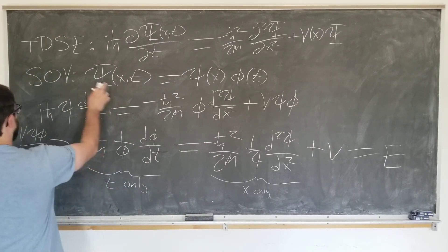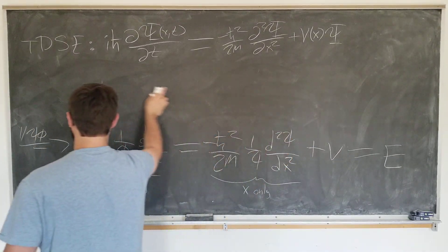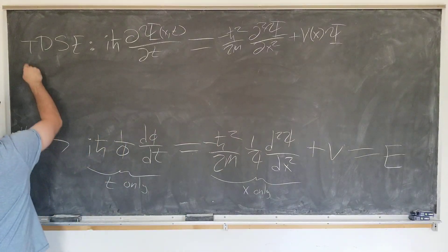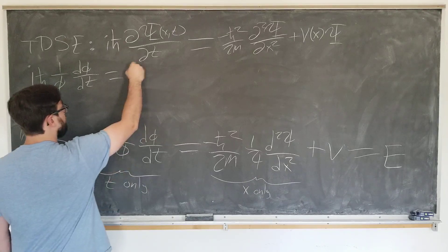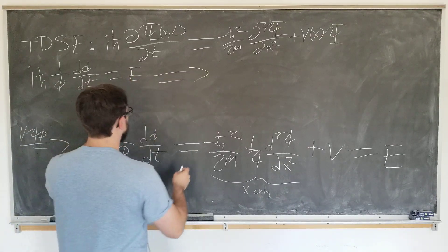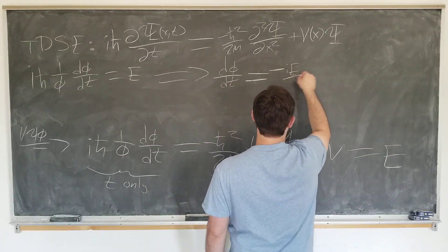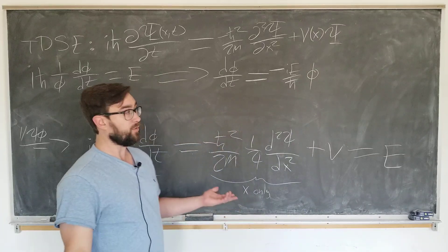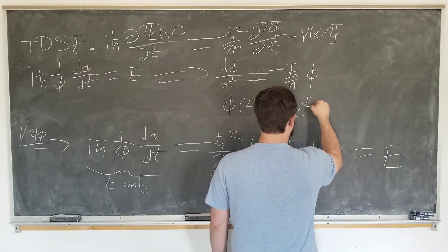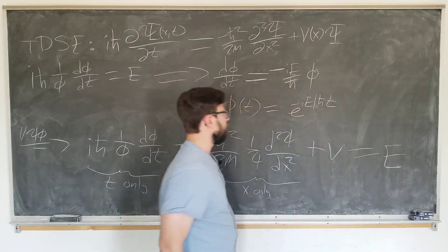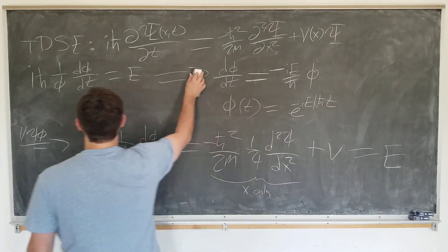Now we can find the time and space equations separately. Starting with the time equation: i h-bar times (1/phi) d-phi/dt equals E. Multiplying both sides by phi gives d-phi/dt equals minus i E over h-bar times phi, which from ordinary differential equations gives an exponential solution: phi(t) equals e to the minus i E over h-bar times t. We put equality since we'll absorb the arbitrary multiplicative constant into psi later.